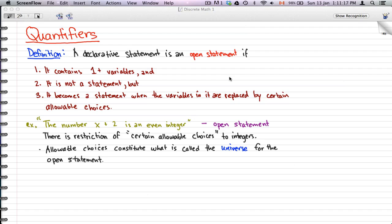The first definition I have is: a declarative statement is an open statement if it contains one or more variables, and it is not a statement, but it becomes a statement when the variables in it are replaced by certain allowable choices.